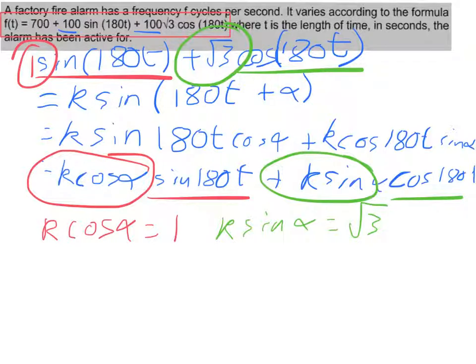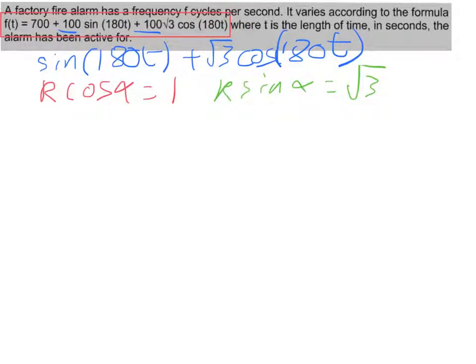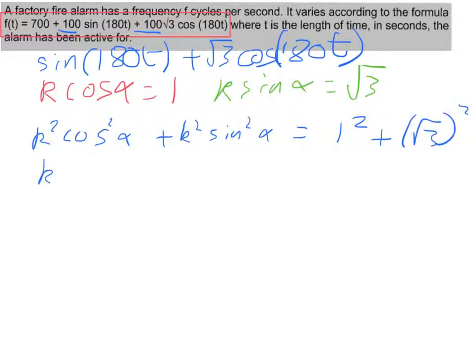Right, I'll just tidy this up. Right, and I need to find what k and alpha are. So to find k, I can square my two terms and add them together, and I'll do the same with the actual values. So I've squared 1 and squared root 3.